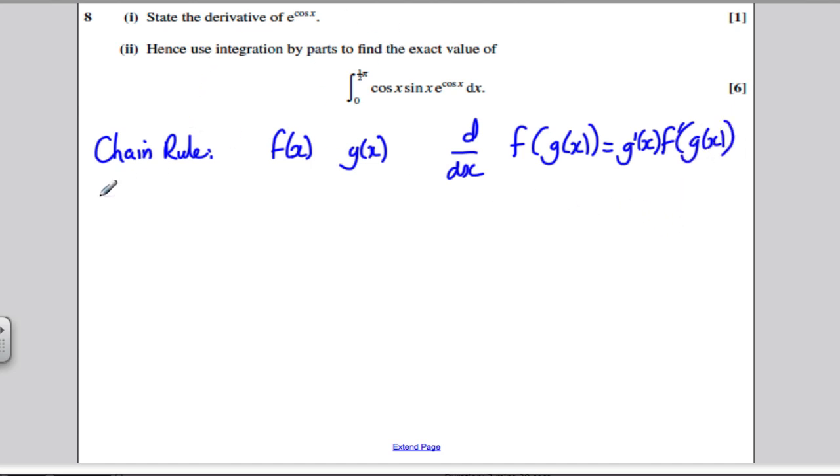Our chain rule here, our f of x is e to the x, and our g of x is cos x.